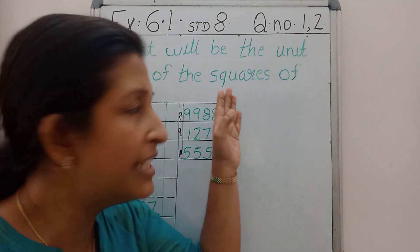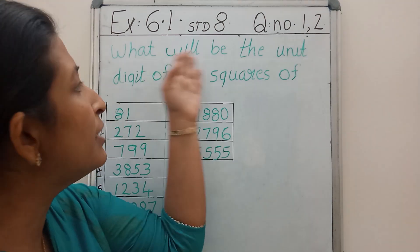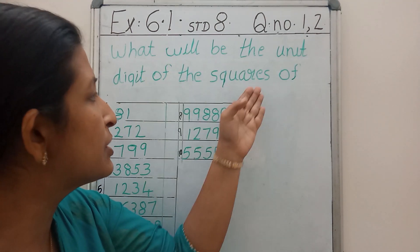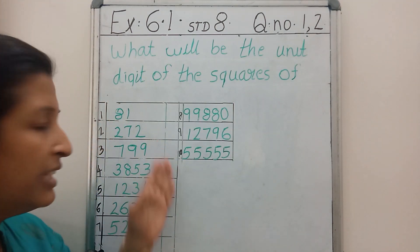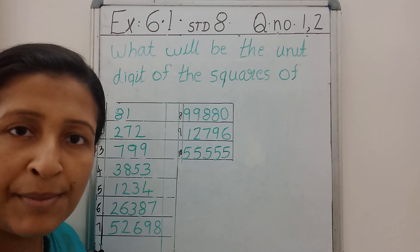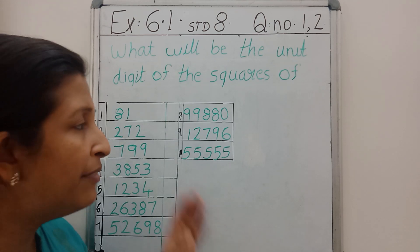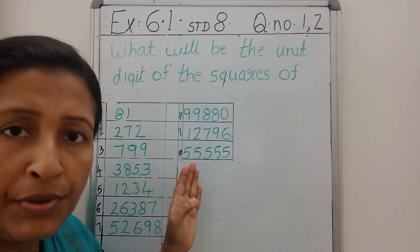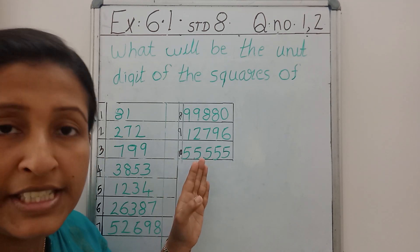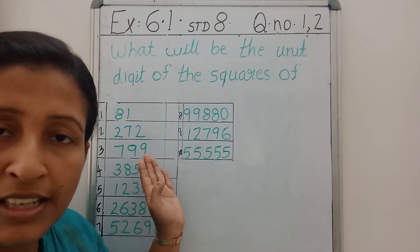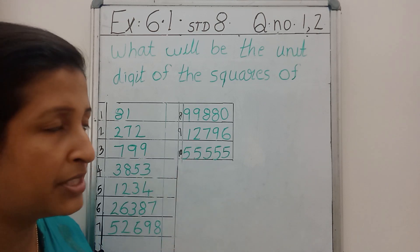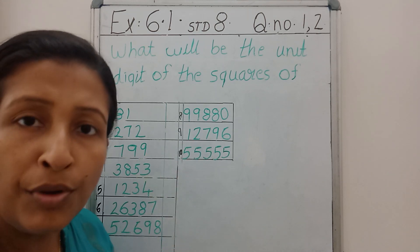The first question says: what will be the unit digit of the squares of these numbers? They have given some numbers and we have to find out what is the unit digit of the squares of these numbers.